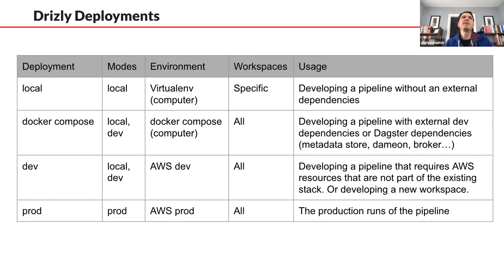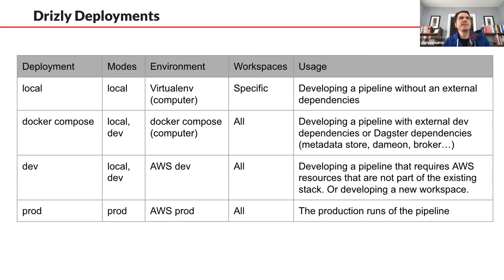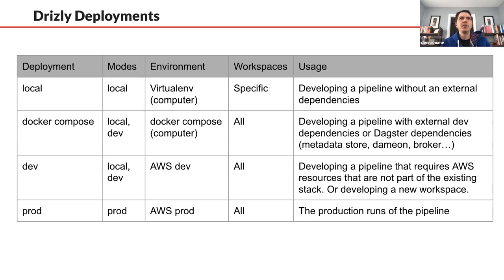We wrap all this together across four different deployments of Dagster. First, local — just running Dagster from within a virtual environment, specific to one workspace, for quickly getting your pipeline to compile and check it. Second, a Dagster Compose setup, which is for your local machine but brings in more Dagster dependencies such as the Postgres database and the daemon, for more involved testing to see that every aspect of your pipeline is working correctly. After that, code is pushed to Git and depending on the branch, it's deployed either to our dev environment on our AWS dev account, or prod on our AWS prod account.